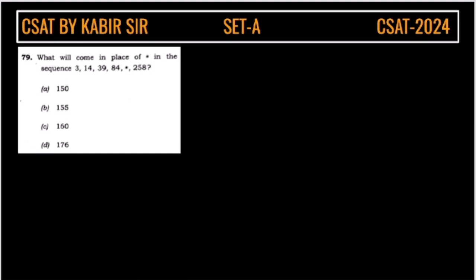Now, this is a question from reasoning series type of question. So, this is 3, 14, 39, 84, and this is 258.